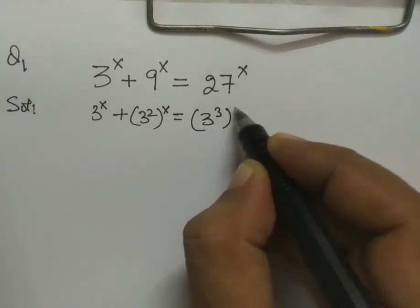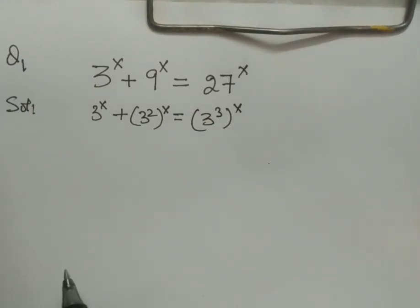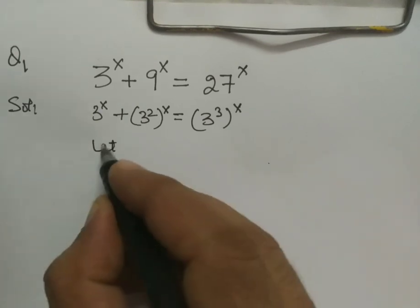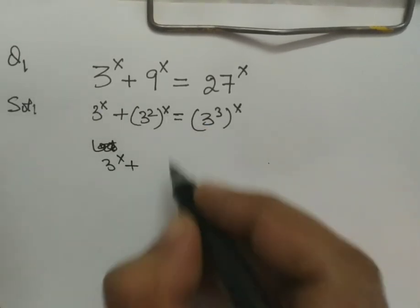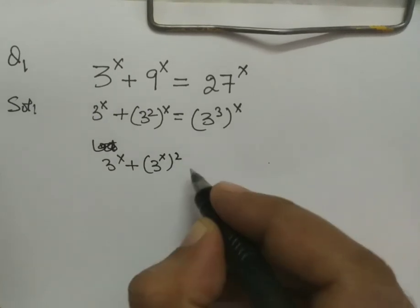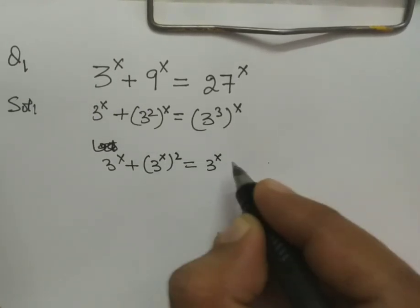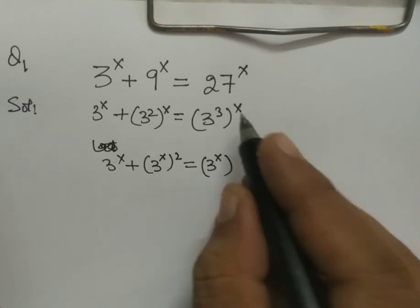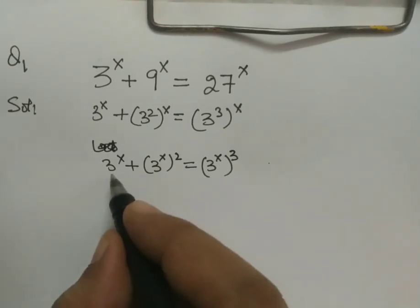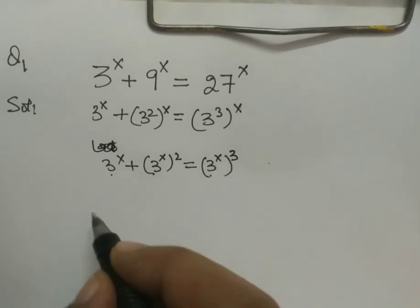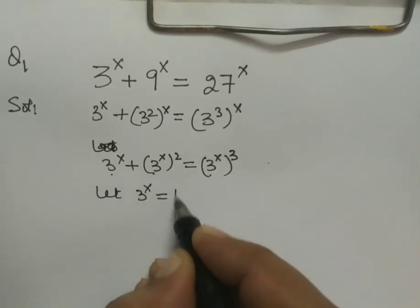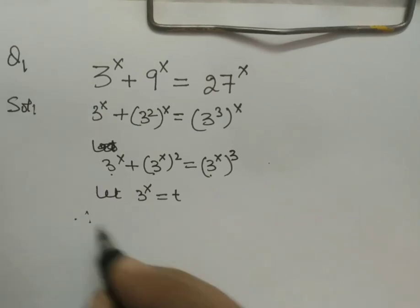And 27^x can be written as (3^3)^x. Now we notice 3^x appears everywhere. We can factor: 3^x + (3^x)^2 = (3^x)^3. So let t = 3^x, and substitute throughout the equation.